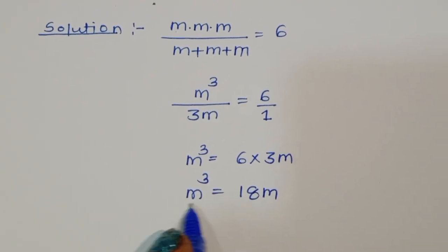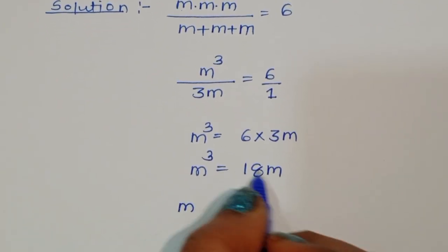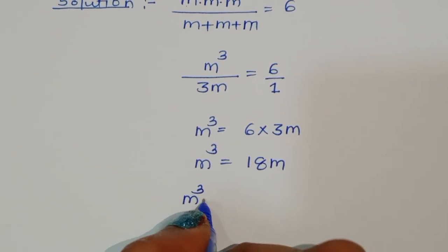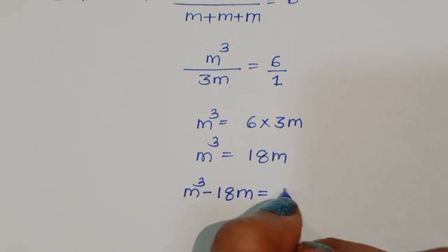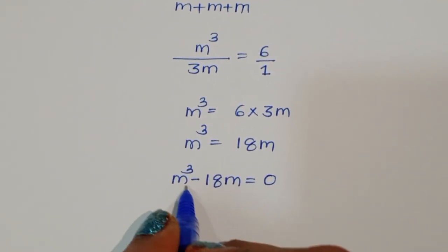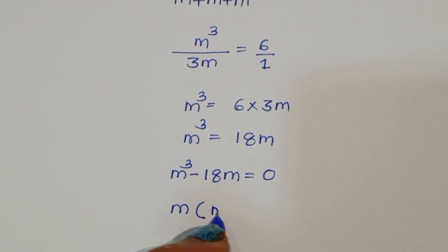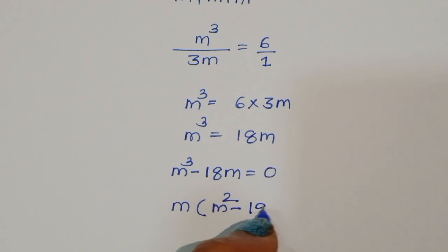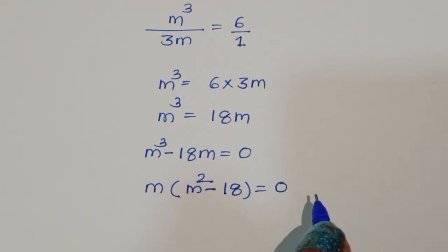We have m cubed equals 18m. We can convert this equation to m cubed minus 18m is equal to 0. Now we can take m as a common factor, so we get m times (m squared minus 18) is equal to 0.